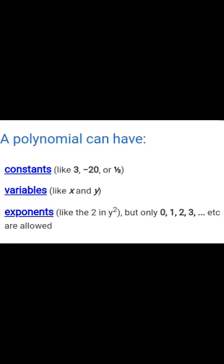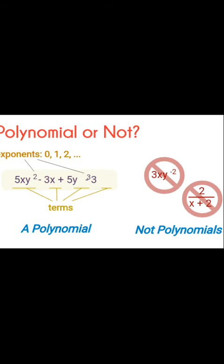A polynomial can have a constant, which is numerical; an alphabet, which is called a variable; and a power, which is called an exponent — for example y-square. So we can say a polynomial is an algebraic expression with variables and non-negative integer exponents.